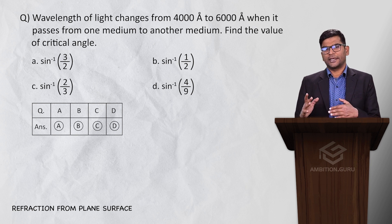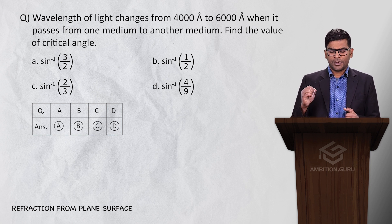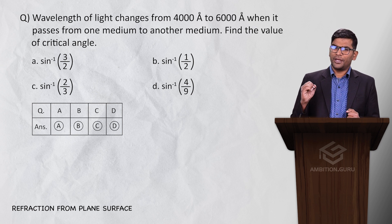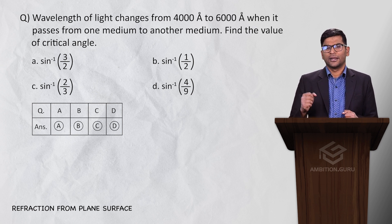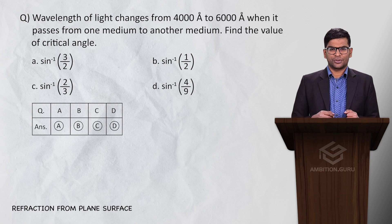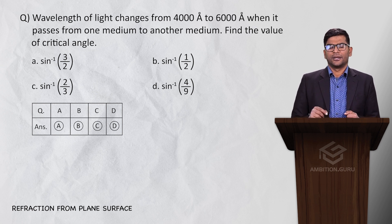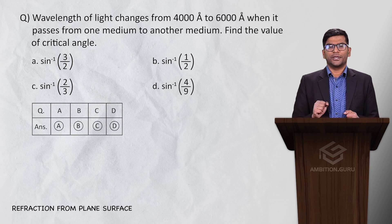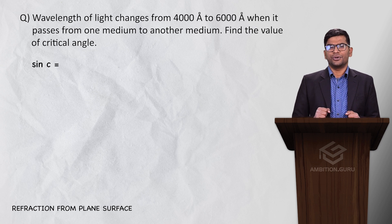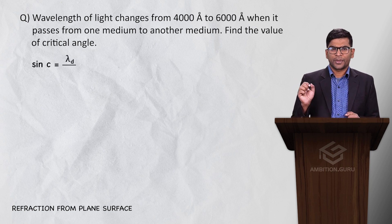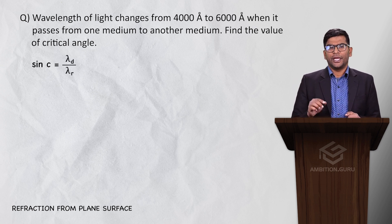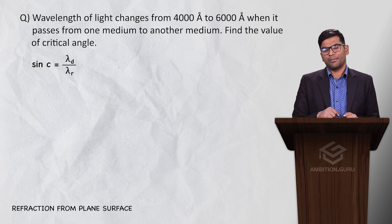Now in this case, let's do the calculation. In one medium we have 4000 angstrom, in another we have 6000 angstrom. We can give it in terms of velocity, in terms of refractive index, we can ask the question. Sin c equals wavelength in denser upon wavelength in rarer. In one medium 4000 angstrom, in another 6000.